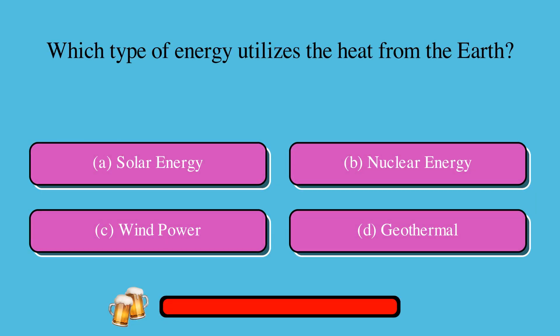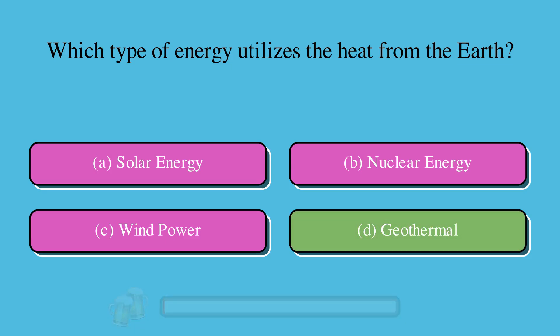Which type of energy utilizes the heat from the Earth? A. Solar energy, B. Nuclear energy, C. Wind power, or D. Geothermal? The correct answer is D. Geothermal.